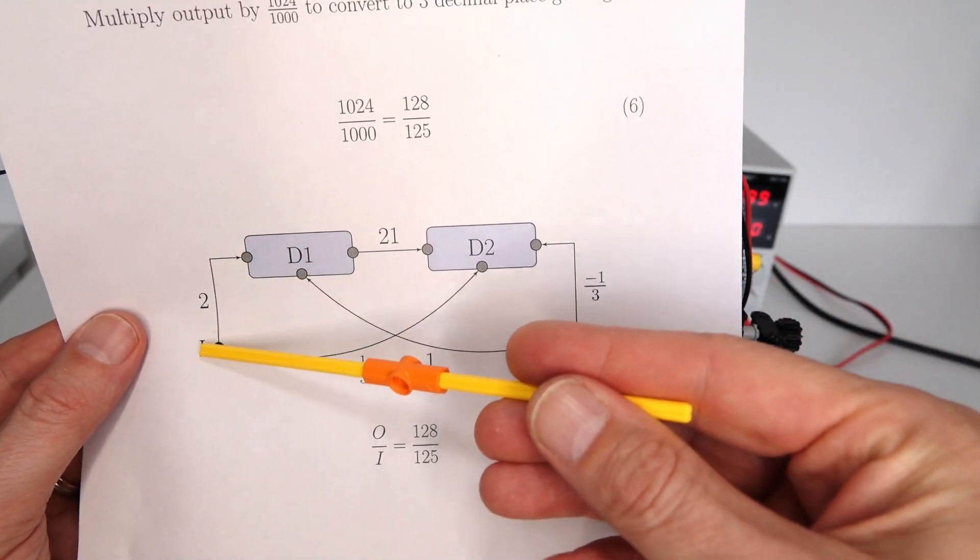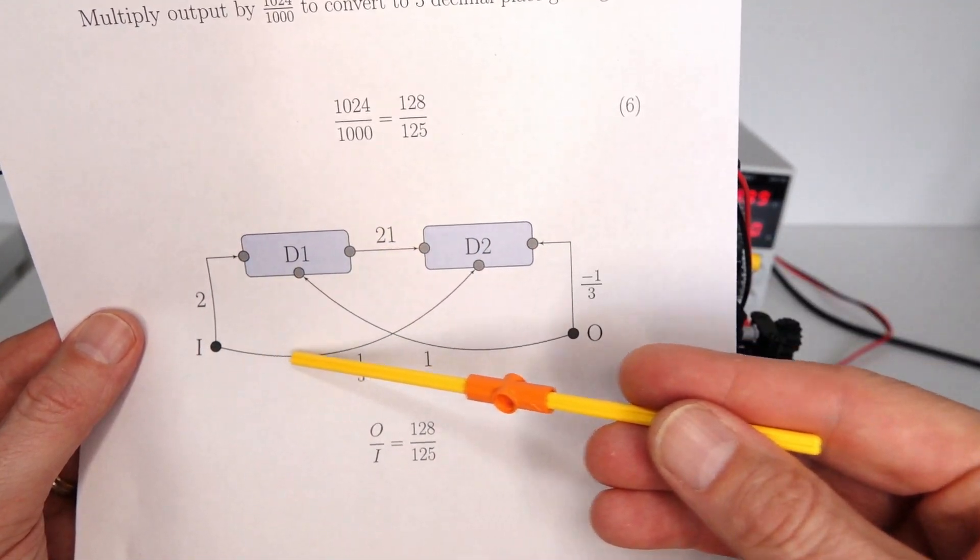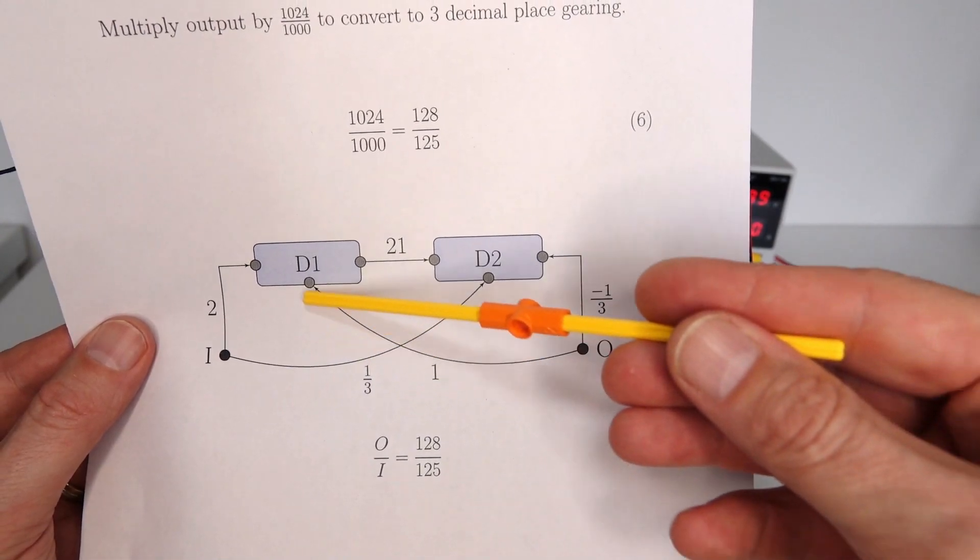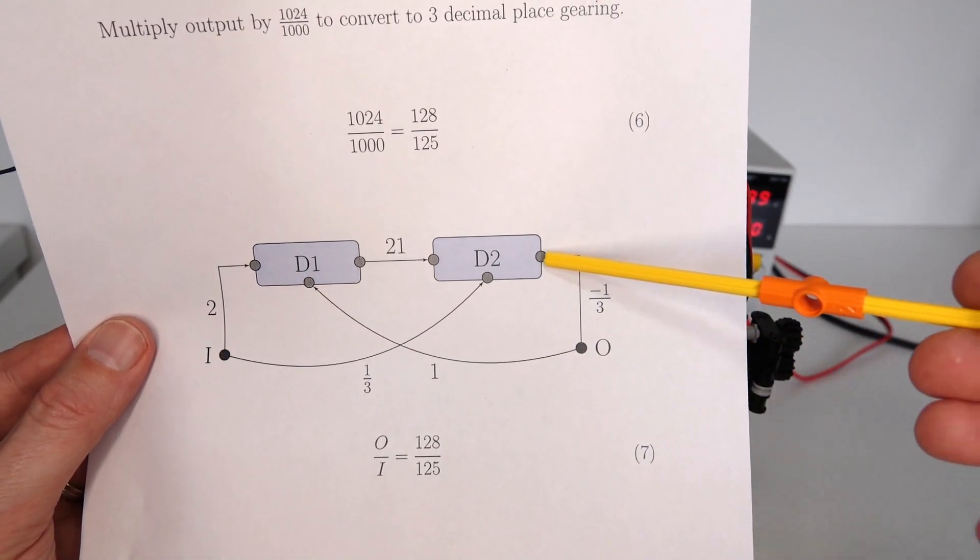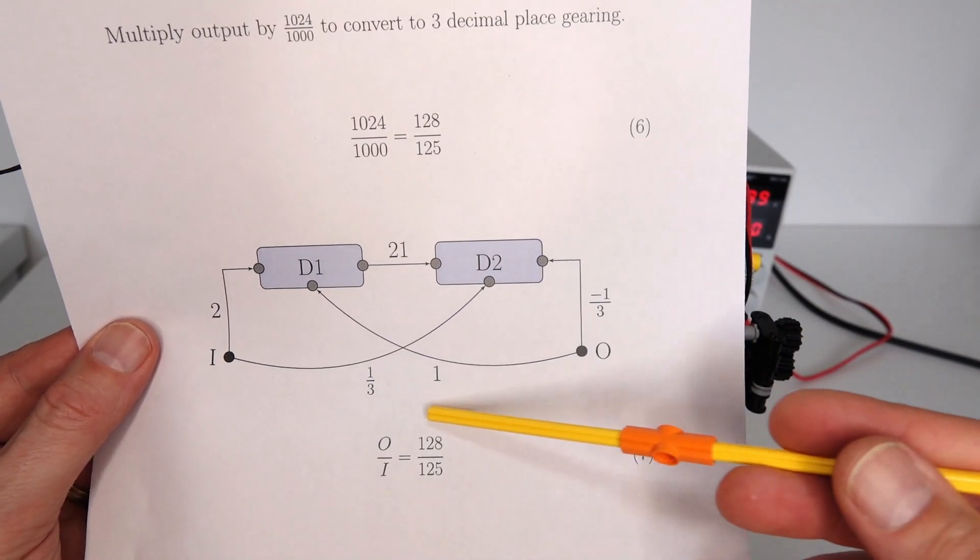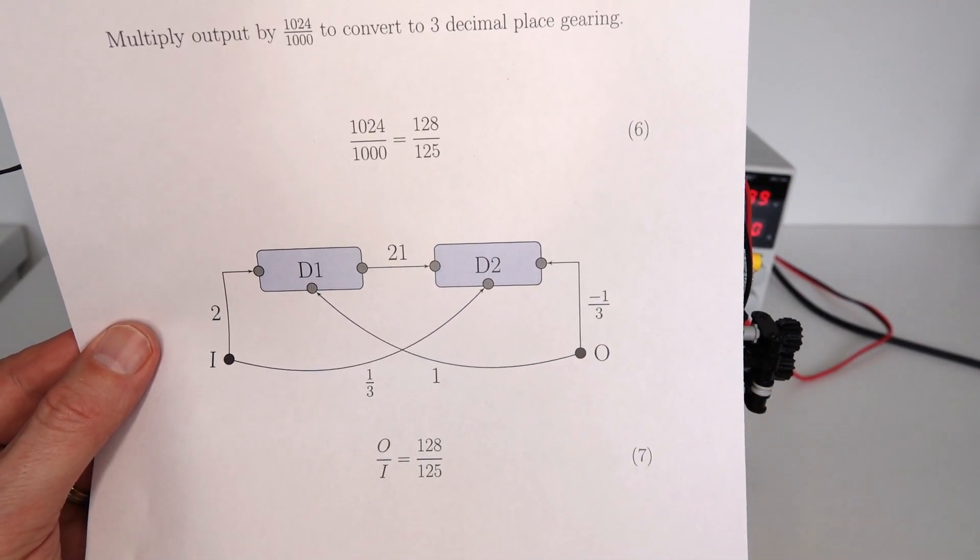So it's a gearing ratio of two between the output and differential one, a third to the center of D2 from the output, a gearing ratio of one, minus a third back there, and 21 across here. So that gives us exactly that ratio that is needed to make that conversion.